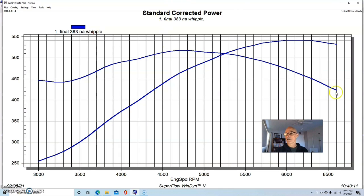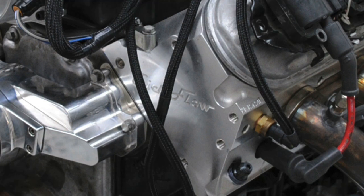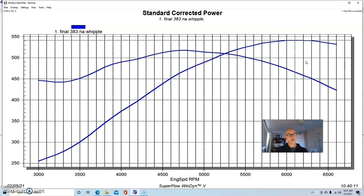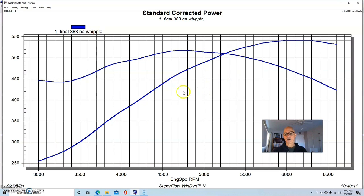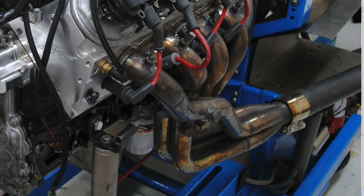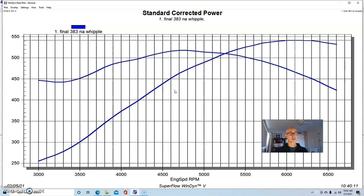We ran this combination with a set of Trick Flow Gen X 215 heads which worked pretty well on that larger bore, the LS1 size bore, the 3.902 bore. The 215 heads were Gen X heads, CNC ported, they flow very well and made good power. When we ran this thing NA, we topped it with a FAST LSXR intake manifold and 102mm throttle body. We also installed a set of 1 3/4-inch headers with collector extensions.